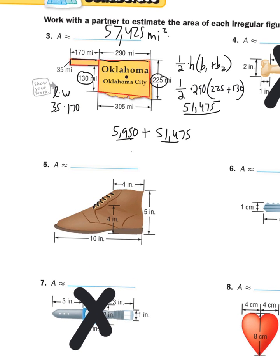For number five — the shoe — I'll help but you do the work. The shape breaks into a rectangle and a triangle. For the rectangle use length times width, and for the triangle use half times base times height. Pause the video, find the area of each shape, write them down, add them together to get the total area, then restart.